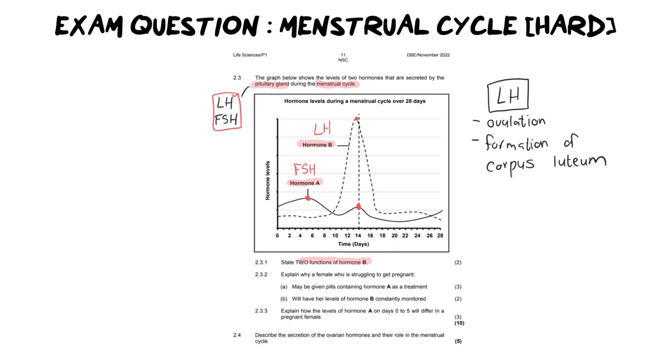Moving on to the next question, it says 2.3.2, explain why a female who is struggling to get pregnant may be given pills containing hormone A. So again, we needed to identify what hormone A was. Now, the first thing I want you to notice about this question is it is an explain question in the beginning here, and it's for three marks, which means we need to give a statement, and then we need to provide two reasons, because that's how the mark allocation is going to work with this style of question.